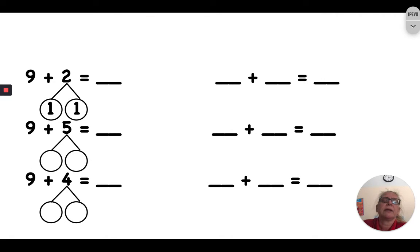Now let's take a look at this. Nine plus two. I can break the two apart to one and one. So ten plus one is eleven. So that means nine plus two is eleven.